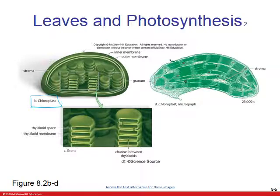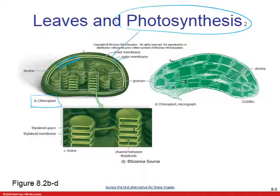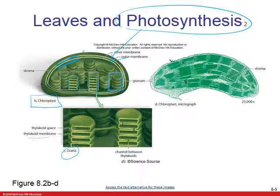Here we have the chloroplast — a double membrane organelle and the site of photosynthesis. Granum is a stack; grana are multiple stacks. These membranes are called thylakoid membranes. This should look familiar — just like we have the infoldings of the mitochondria called cristae, we have infoldings of the inner membrane of the chloroplast called the thylakoid membrane.